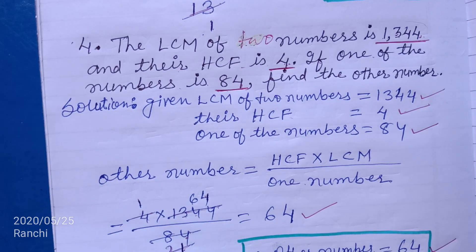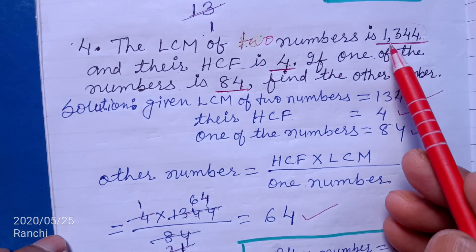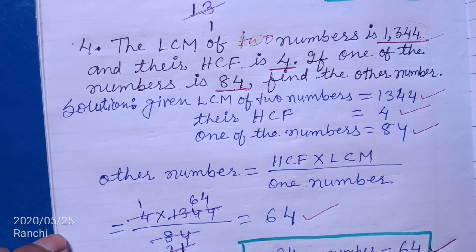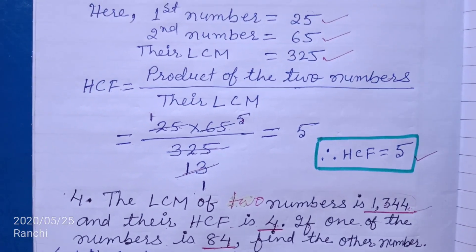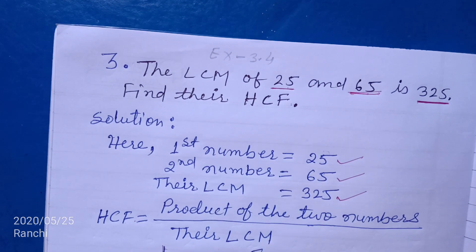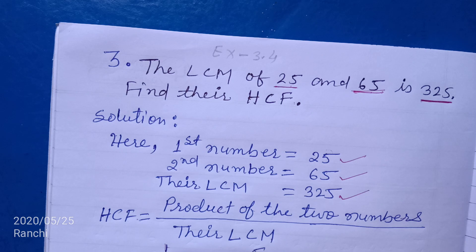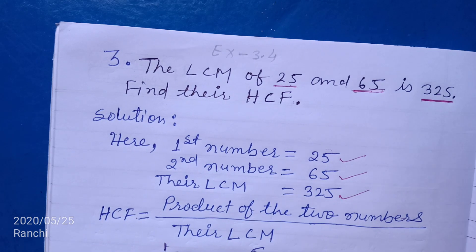So the other number equal to 64. You can verify: the LCM of 84 and 64 is 1344, and the HCF of 84 and 64 is 4. This is the relationship between HCF and LCM of two numbers. So this much for today; in the next video we will discuss word problems based on HCF and LCM. Till then stay at home, stay safe, keep learning and keep growing. If you like this totally free maths video series, please share this video with every friend, tell them to subscribe the channel and press the bell icon so they get notifications of all new videos.